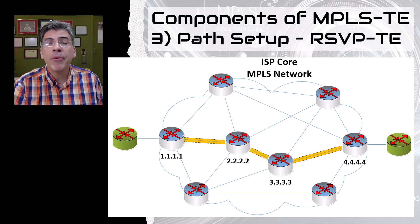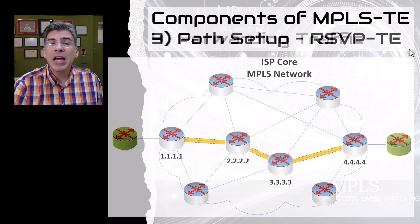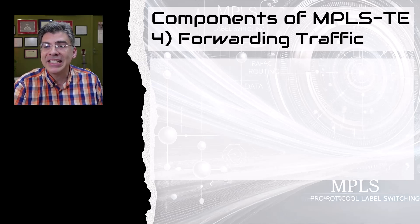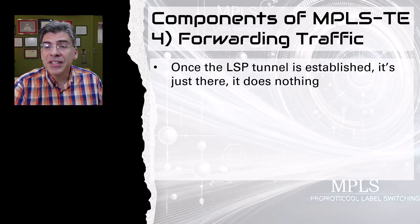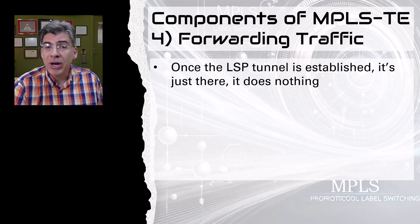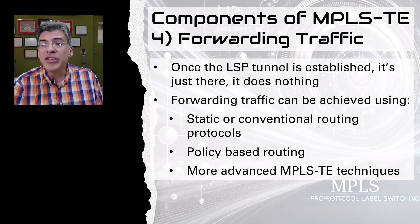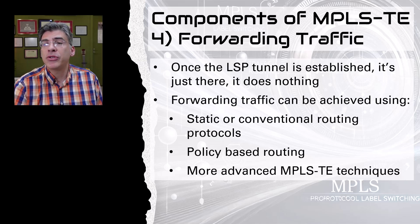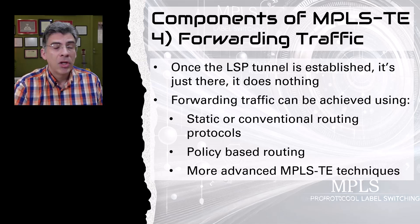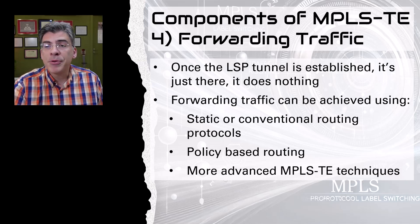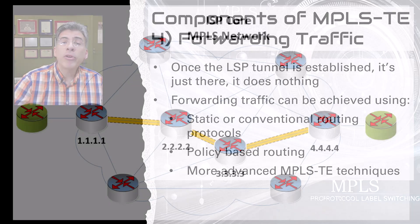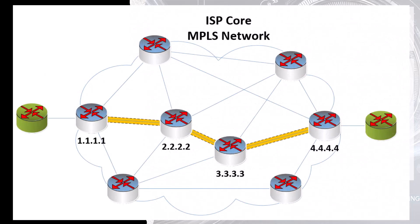Finally, we come to the fourth and final component of MPLS TE operation: the forwarding of traffic through the TE tunnels. Once RSVP establishes the LSP tunnel, it's just there and doesn't do anything until you route traffic through it. You can use conventional routing such as static routing or policy-based routing to route traffic through an MPLS TE tunnel, or you can use more advanced routing options specific to MPLS TE, which give you more options and flexibility — but we'll examine these in upcoming videos.